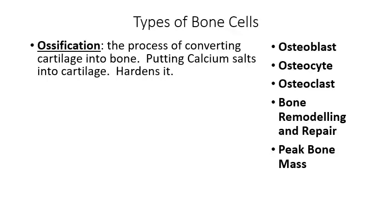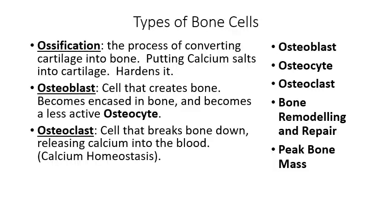Ossification is the process of converting cartilage into bone by putting calcium salts in, which hardens it. An osteoblast creates bone and eventually develops into a less active form simply called an osteocyte — the general term for both osteoblast and osteoclast, meaning simply a bone cell. An osteoclast breaks down bone to get calcium out, as part of calcium homeostasis.